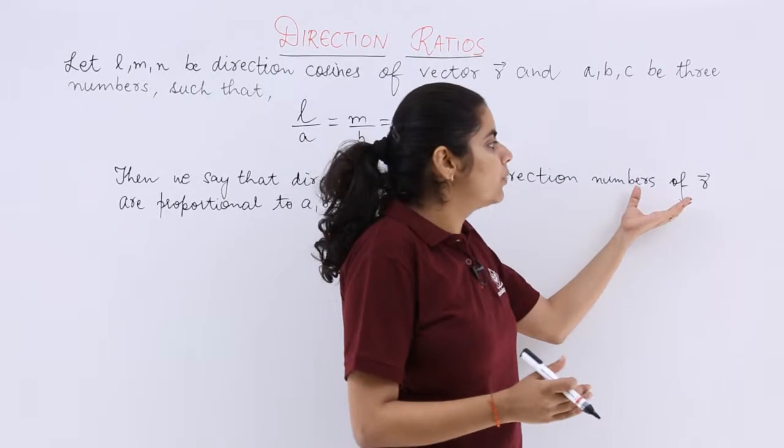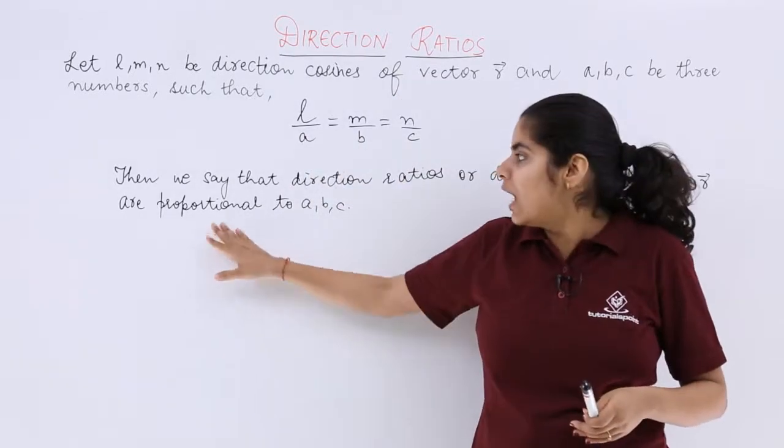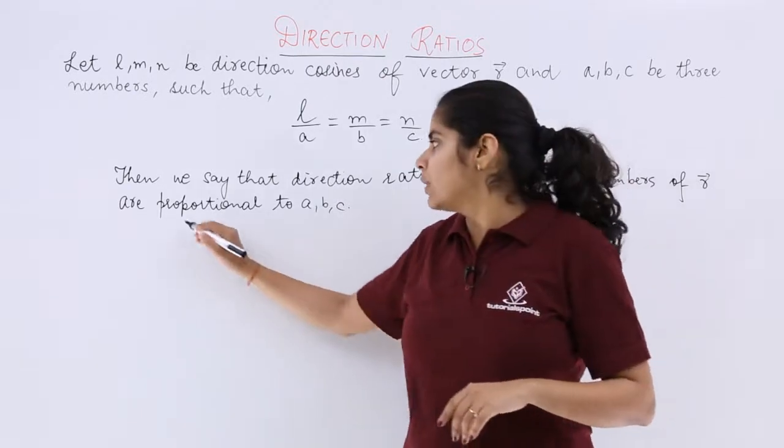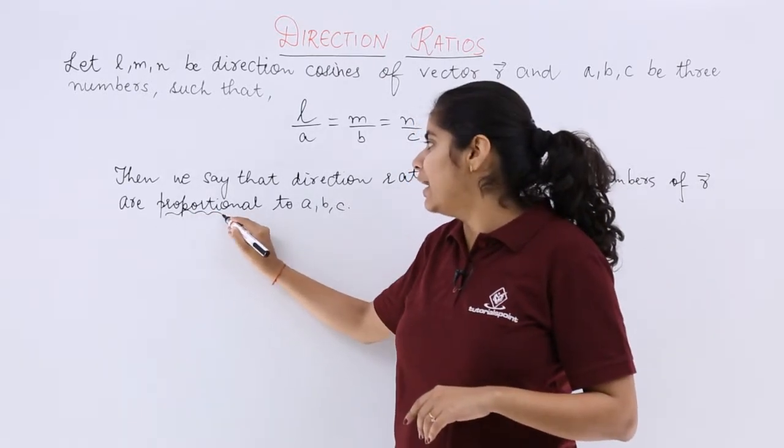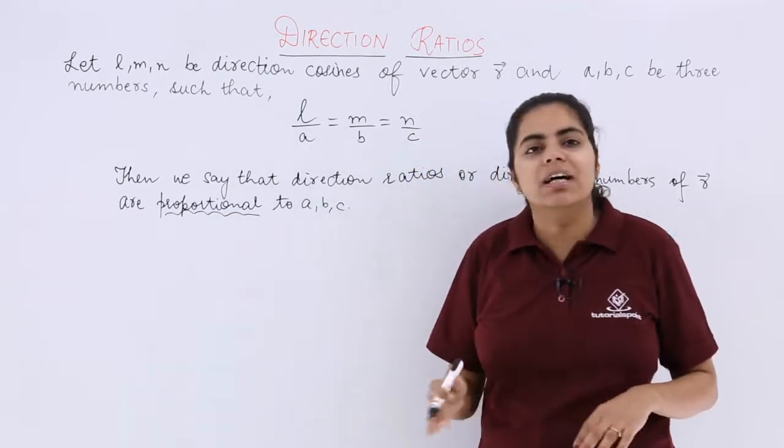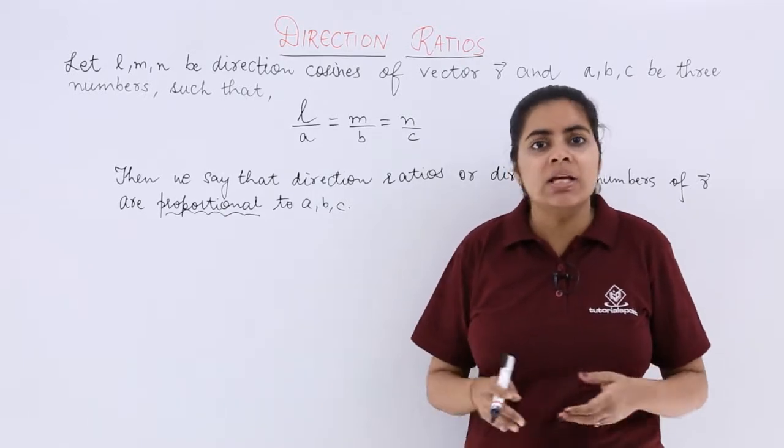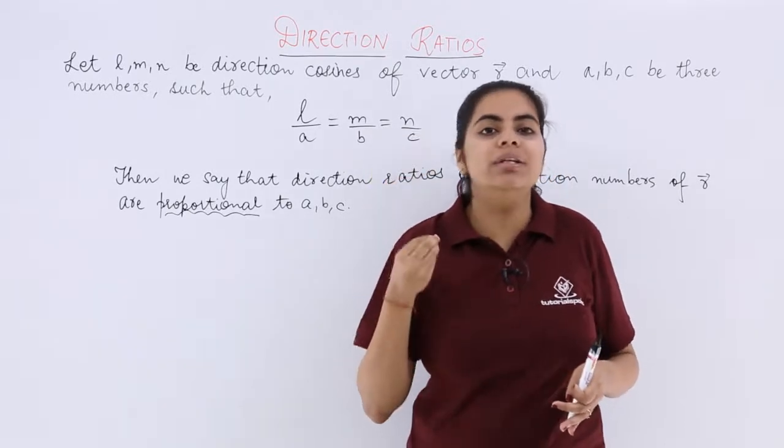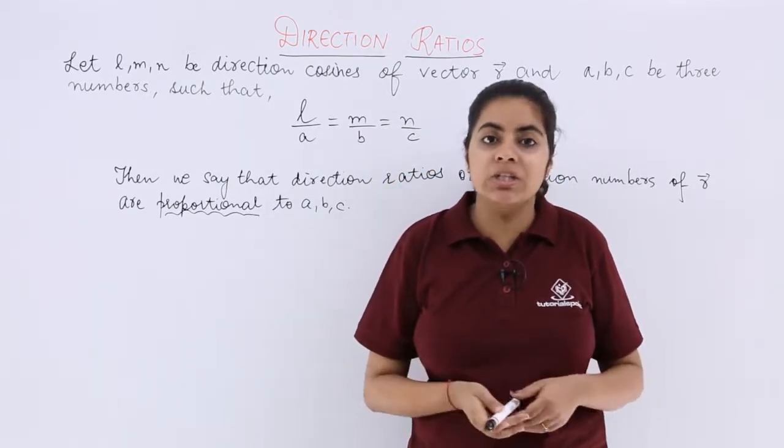Direction ratios or direction numbers of a given vector r are proportional to A, B, C. Remember, I have not said they are directly A, B, C. I have said they are proportional to A, B, C. That is how we understand the direction ratios term or direction numbers term.